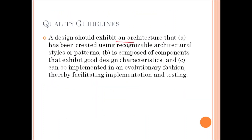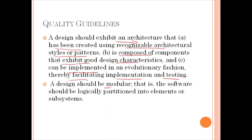The architecture required is one that has been created using a recognizable architectural style or patterns. It is composed of components that exhibit good design characteristics and can be implemented in an evolutionary fashion, one after another — modular evolution may be done — thereby facilitating implementation and testing. The software should be modular, meaning if we have one system, it should be further divided into modules dealing with specific functions of the overall system.